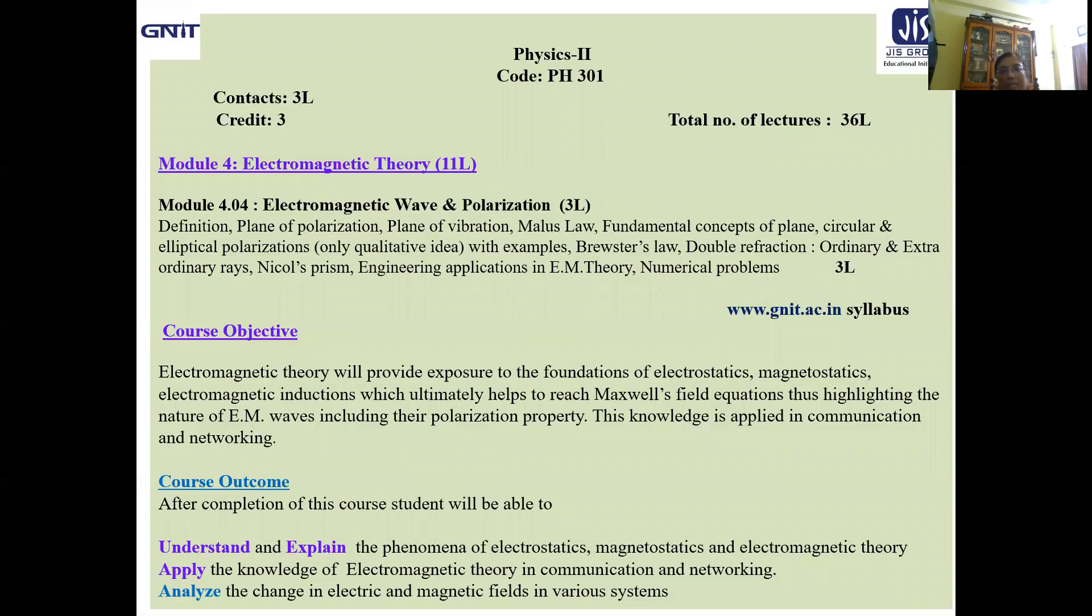Now what is there in this lecture number 13? You all know that we are continuing Module 4 of Physics 2 Code PH301 on Electromagnetic Theory. The total number of lectures included is 11, covering the theory portions.